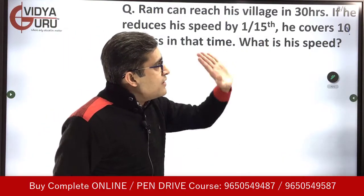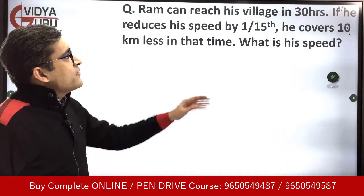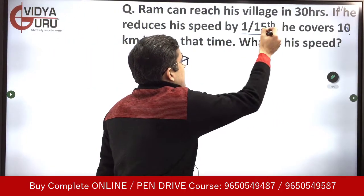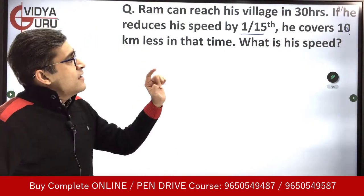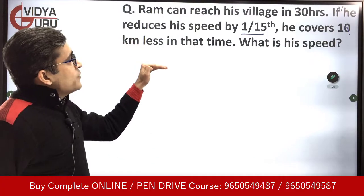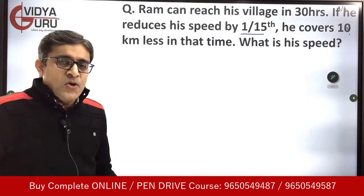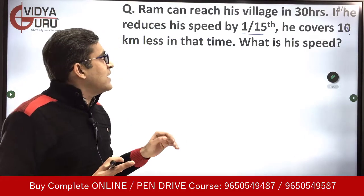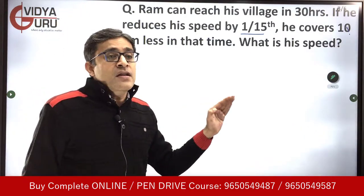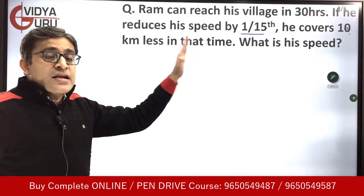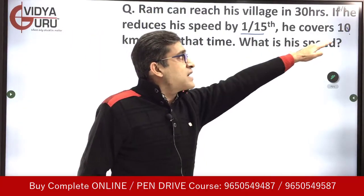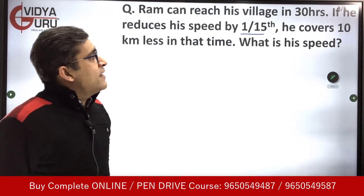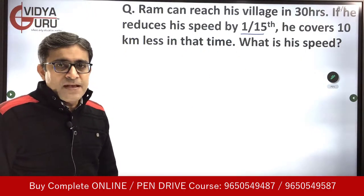Ram can reach his village in 30 hours. If he reduces his speed by 1/15th, then he covers 10 kilometers less in that time. If he reduces his speed, of course he will cover less distance, and he is covering 10 kilometers less. We have to find out his speed.